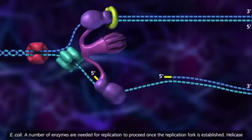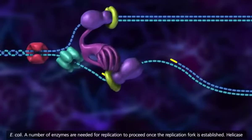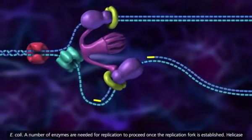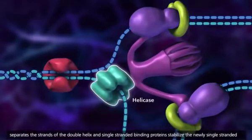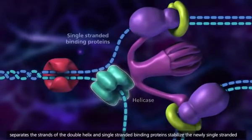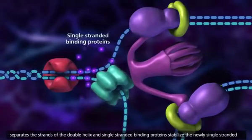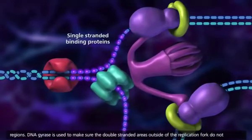A number of enzymes are needed for replication to proceed once the replication fork is established. Helicase separates the strands of the double helix, and single-stranded binding proteins stabilize the newly single-stranded regions.